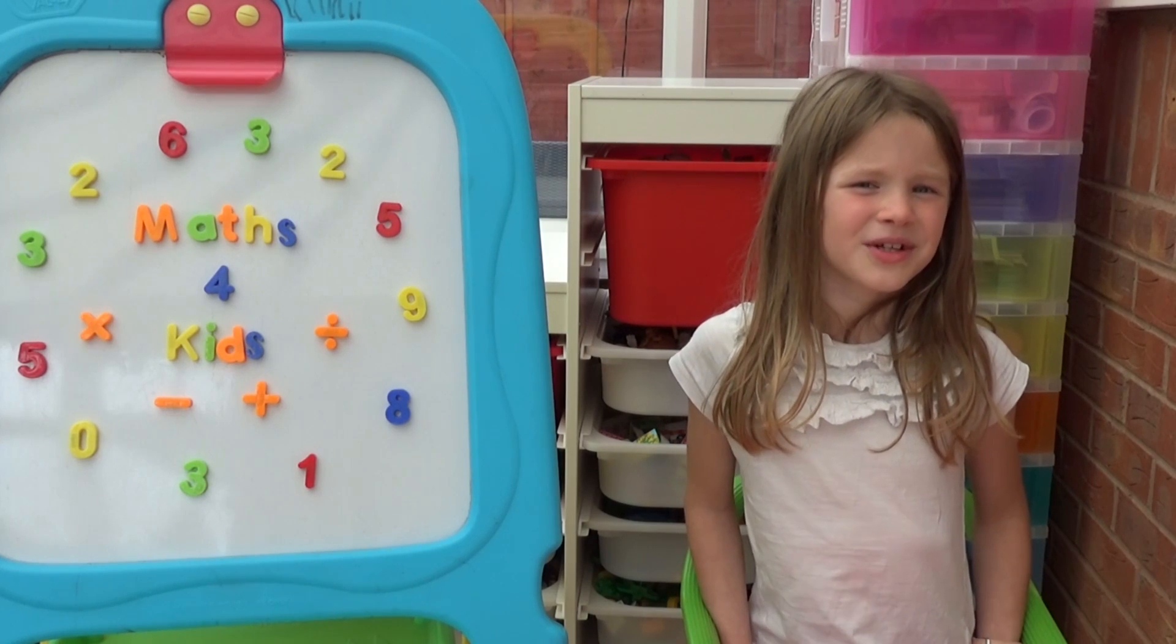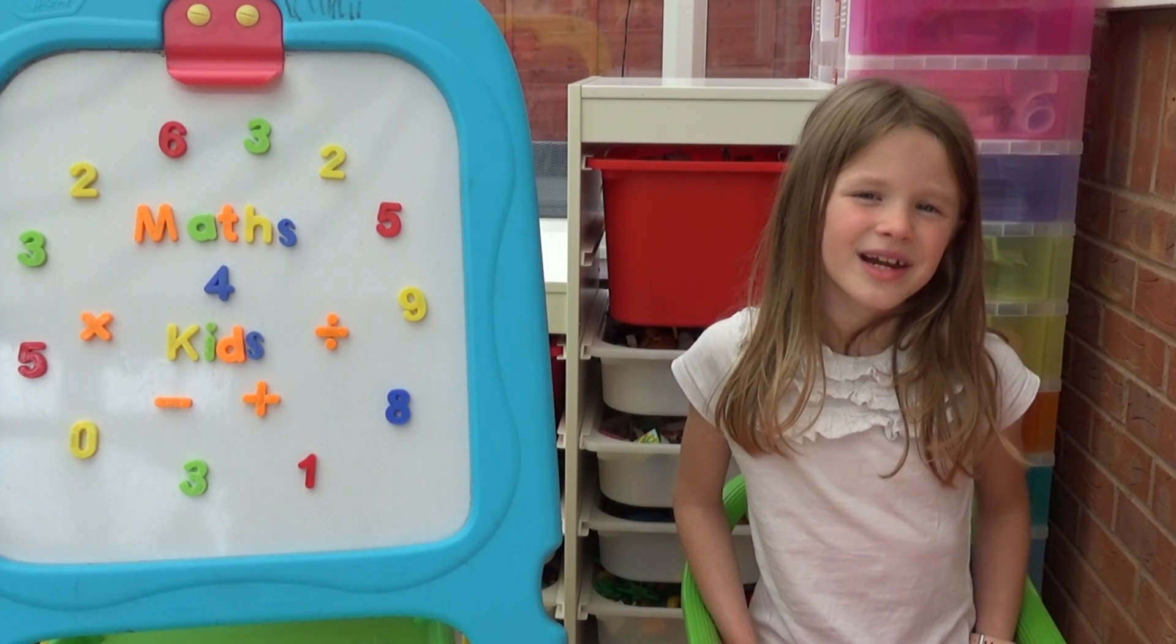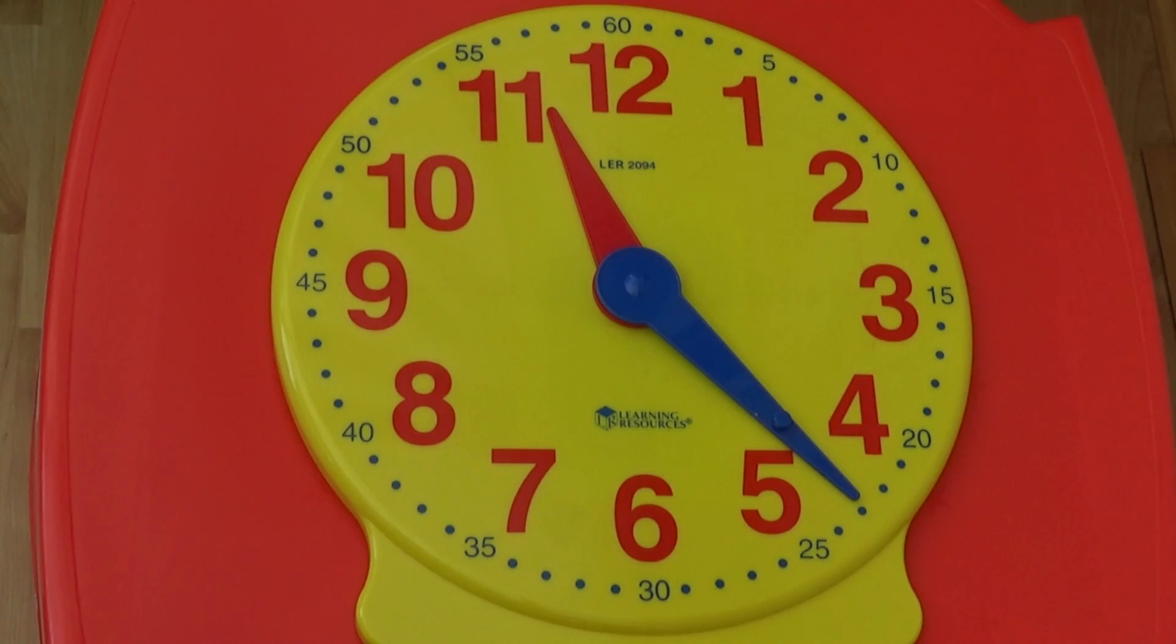We're going to look at some times on an analogue clock then work out what they're showing in both analogue and digital. If we look at the minutes on an analogue clock we can see they go up in fives. These help us when we are working out the time in digital. In analogue we look at minutes past and minutes to but with digital we always look at minutes past.